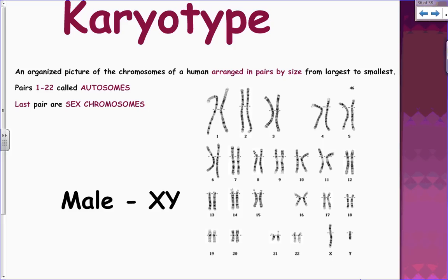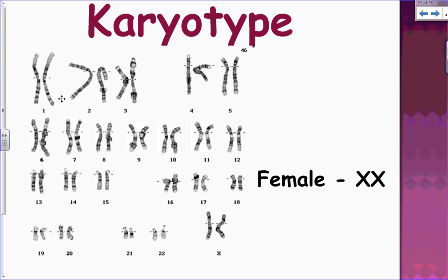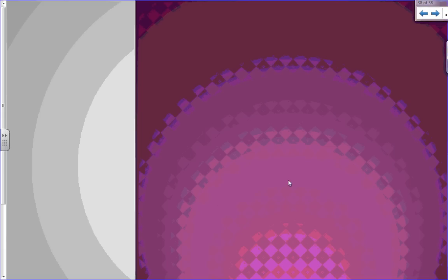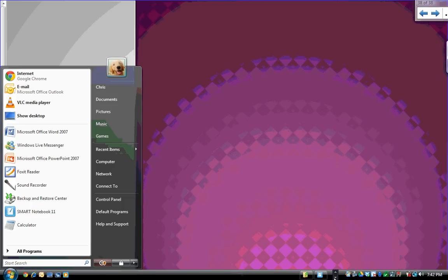The last topic is karyotypes. Karyotypes are pictures showing chromosomes arranged in pairs by size from smallest to largest, typically numbered one to 22, with the last pair being the sex chromosomes. A male karyotype has an X and a Y; a female karyotype has two X's. In your genetic disorders project, you will create karyotypes that have something wrong with them and determine what disease that indicates. That concludes the notes on meiosis.